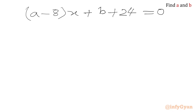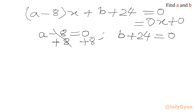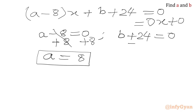We can write the right hand side as 0x plus 0. Comparing both sides: a minus 8 must equal 0, so a equals 8. And b plus 24 must equal 0, so b equals minus 24. This confirms our answer from Method 1.